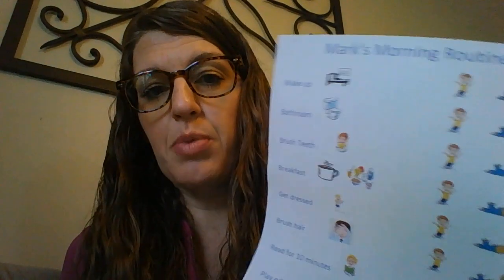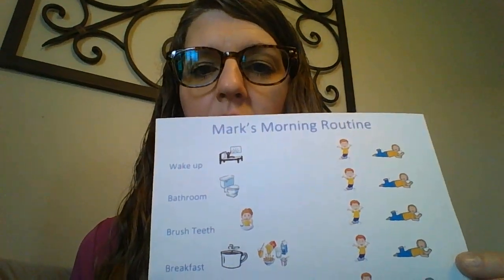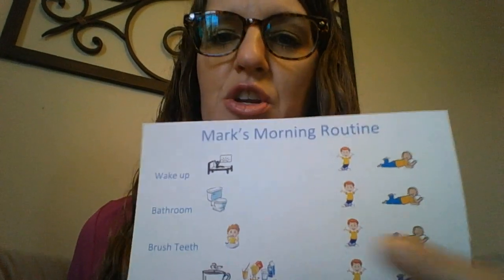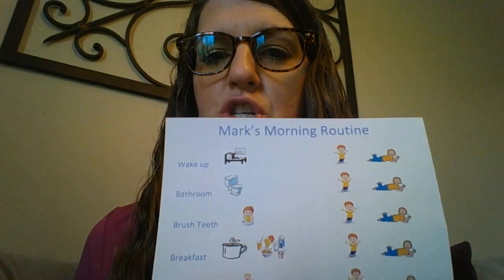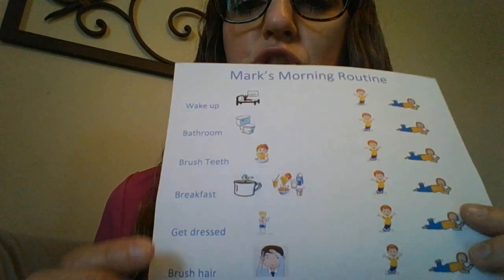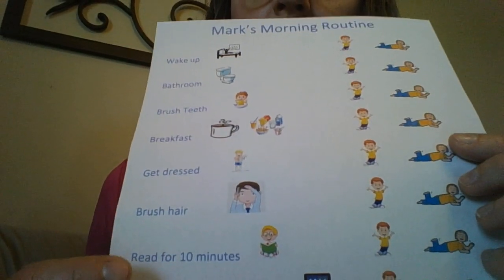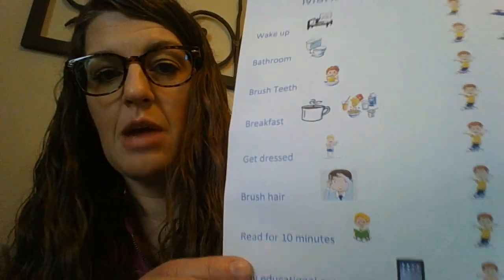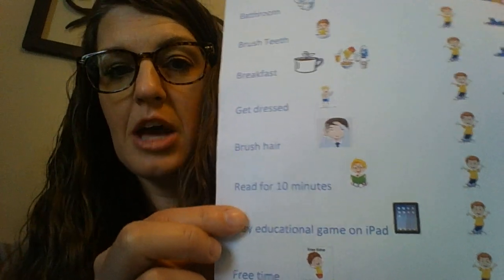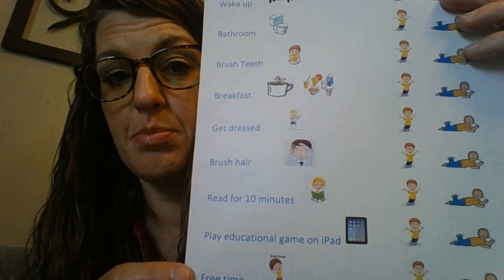Here's a simple morning routine for a child. You can see there are different things like wake up, bathroom, brush your teeth, eat your breakfast, get dressed, brush your hair, read for 10 minutes, and then play an educational game on the iPad. You can see that reading is right before playing that game — that's where your Premack principle is in place.